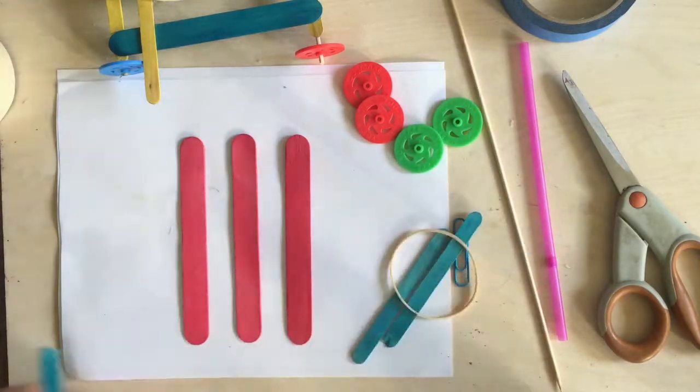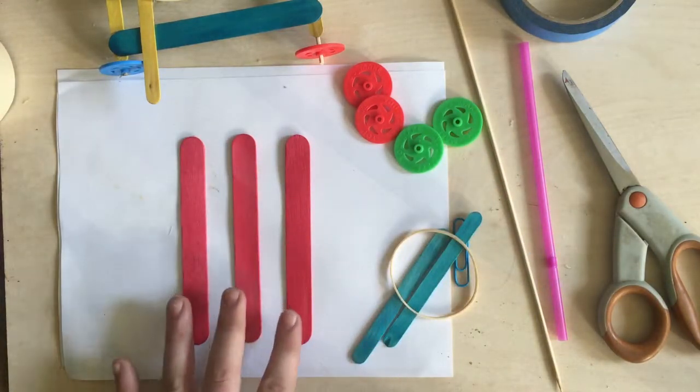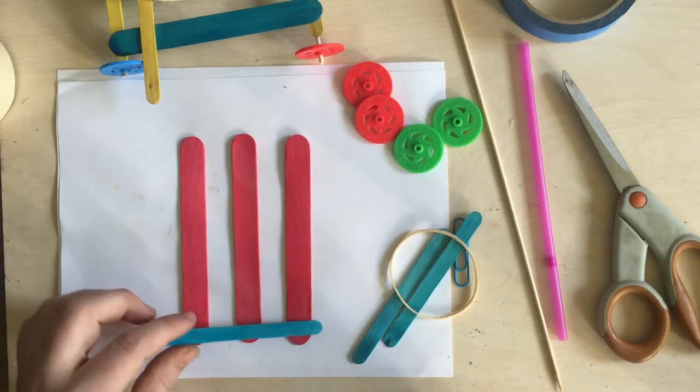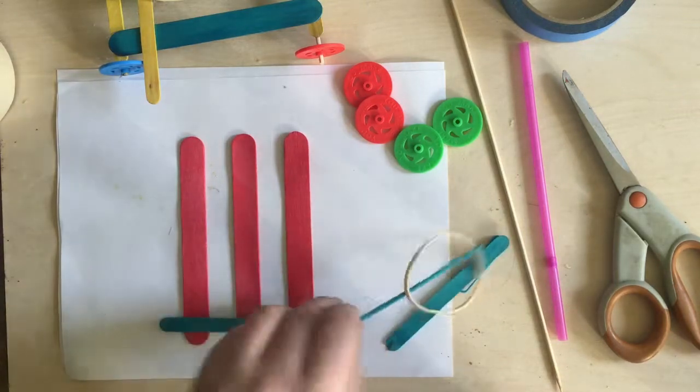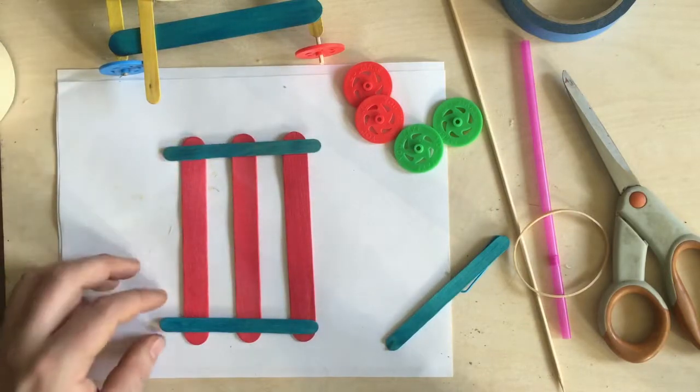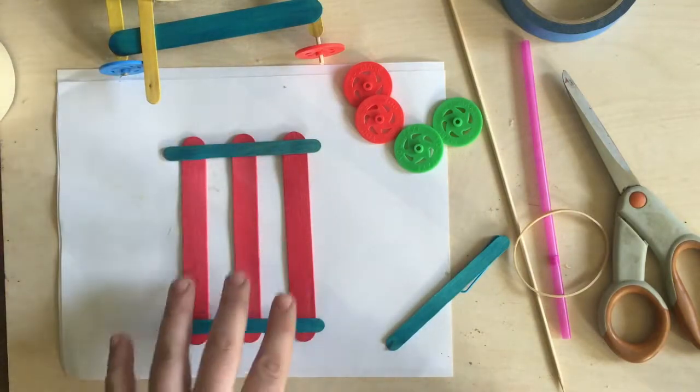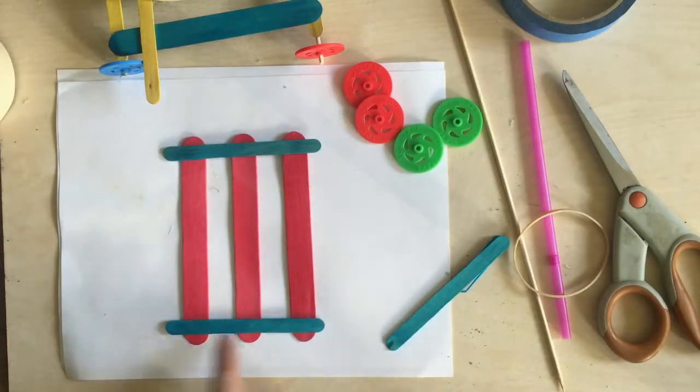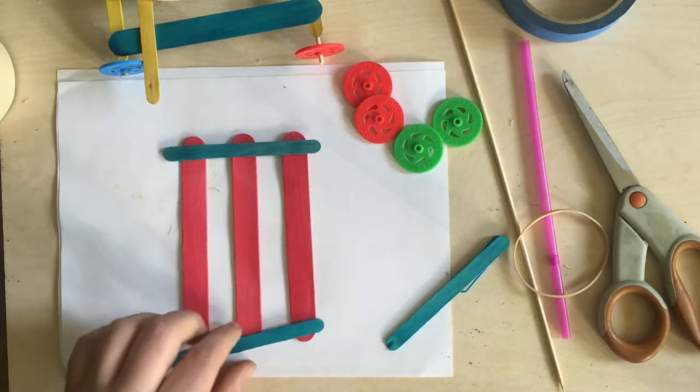So the first thing I'm gonna do is lay out my three big popsicle sticks here like this and take two of my smaller ones and lay them across the top and bottom like so. This is gonna be my body lengthwise up and down.